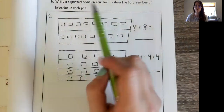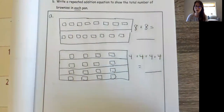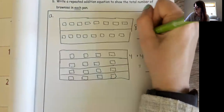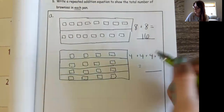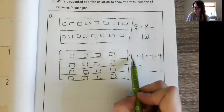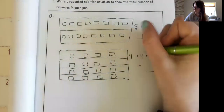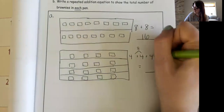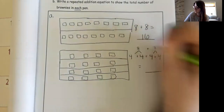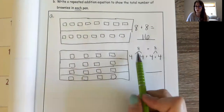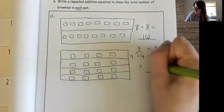To figure out eight plus eight — that's a doubles fact — that gives me 16. For the second pan I can use mental math: four plus four gives me eight, and four plus four gives me eight, so it's the same as the first one — eight plus eight equals 16.